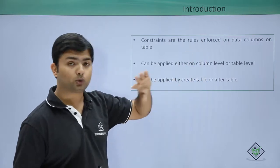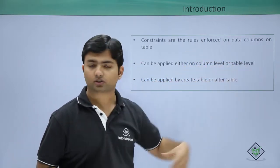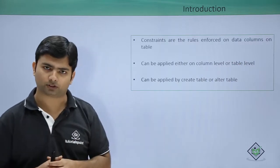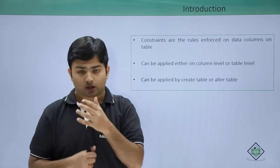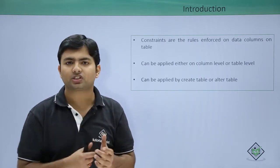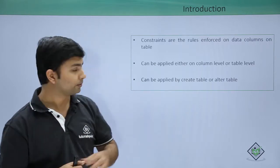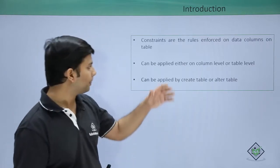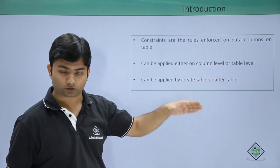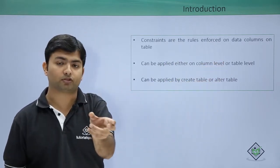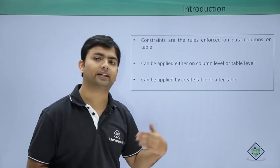What's the difference? When you write create table, table name, column 1 and its data type, if right after that you are starting with the constraint definition on that particular column, that is a column level constraint definition. It means along with the column definition - column name, data type - you are adding the constraint definition as well.